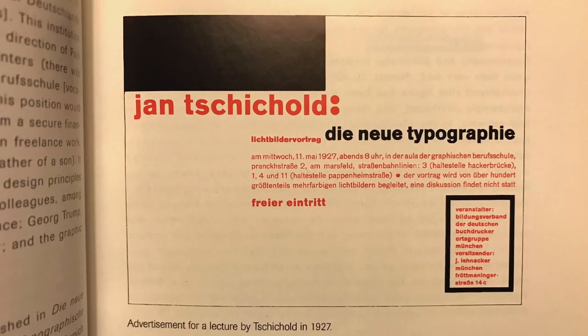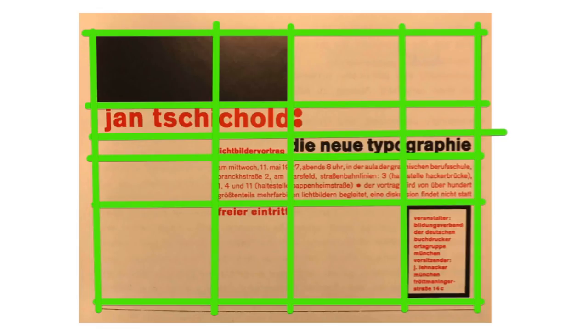Here's another example: Jan Tschichold's beautiful advertisement for a lecture from 1927. I looked at this and thought, how should this be of and for the web? How should it be flexible? At what places should the layout collapse? At what places should it expand? How should it rejigger based on the amount of content or the amount of space that's available?